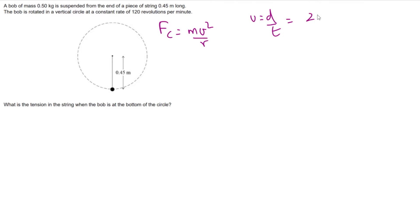The velocity can be worked out by just doing distance over time for one rotation. So that's 2πr over the period. If you do that you get 2π times 0.45 and the period is half a second to do one revolution.